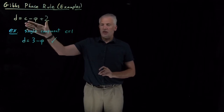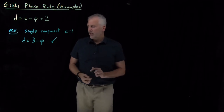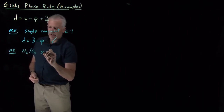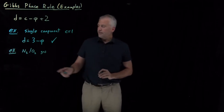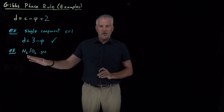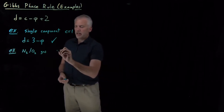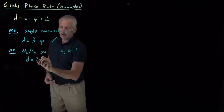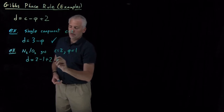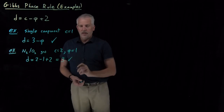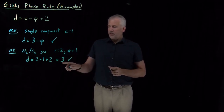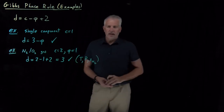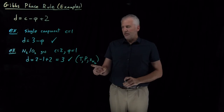The Gibbs phase rule is a more generalized version of the rule we've used previously for single phases. For multiple-component systems, consider a gaseous system with a composition like air — a mixture of nitrogen and oxygen. That's a two-component, single-phase system. The number of degrees of freedom is two components minus one phase plus two, giving three. That's reasonable: we could specify temperature, pressure, and composition, but once we've specified those three, we can't also independently specify the mole fraction of oxygen.